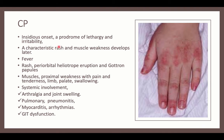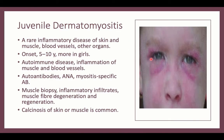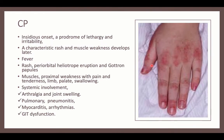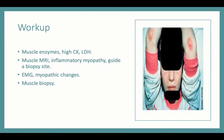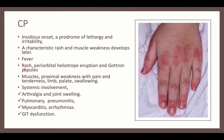This includes the rash of dermatomyositis called the heliotrope rash, having a violaceous or purplish color in the periorbital area, possibly associated with periorbital edema. Gottron's papules are another very characteristic skin manifestation, appearing over the elbow joints, knee, ankles, and other joints.